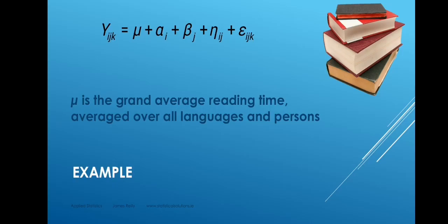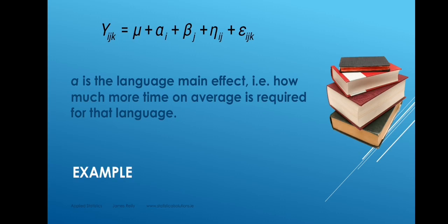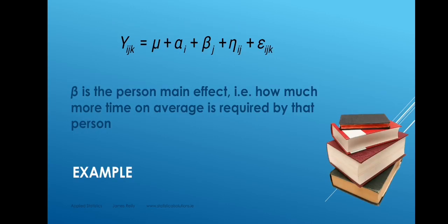We can state all of these things in relation to our reading experiment. Y is the time required to read a page from the novel. Mu is the grand average reading time averaged over all languages and persons. Alpha is the language main effect: how much more time on average is required to read a page in that language compared to the grand average. Beta is the person main effect: how much more time on average is required by that person to read a page compared to the grand average.